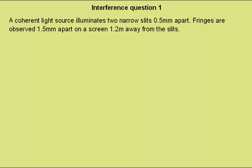Interference question 1. A coherent light source illuminates two narrow slits 0.5mm apart. Fringes are observed 1.5mm apart on a screen 1.2m away from the slits. Find the wavelength of the light source.